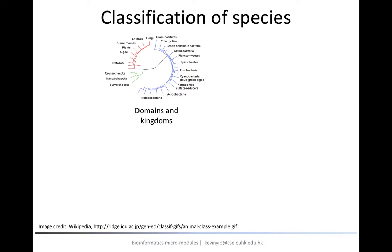Based on this idea, all species on Earth can be generally classified into three domains: bacteria in blue, archaea in green, and eukaryota in red.